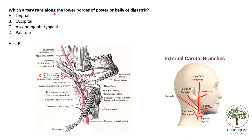Which artery runs along the lower border of the posterior belly of the digastric muscle? Near the upper border runs the posterior auricular artery, and near the lower border runs the occipital artery. Both these arteries are branches of the external carotid artery. In the image, the posterior belly of the digastric lies between them — the occipital artery parallel to the lower border and the posterior auricular artery parallel to the upper border. This is an important landmark question.